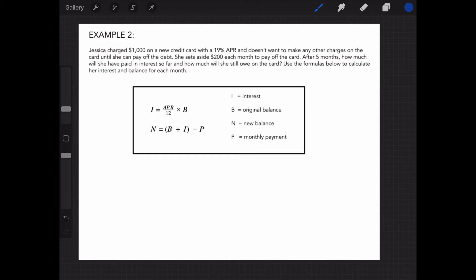Jessica's in a similar situation as our pal Tim from the previous Learn It video. She also owes $1,000 on her new credit card with 19% APR and doesn't want to make any other charges on the card until she can pay off the debt. However, unlike Tim, she wants to pay more than the minimum payment and sets aside $200 each month to pay off the card.